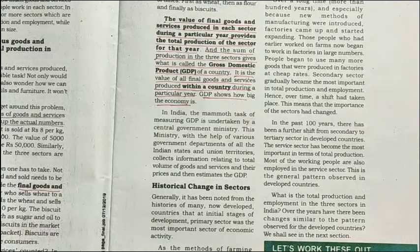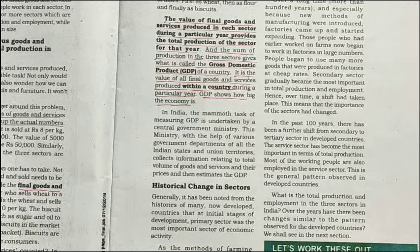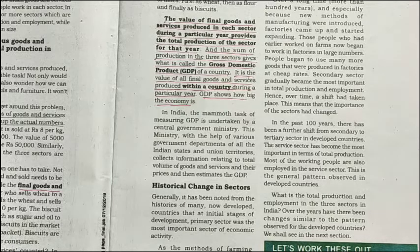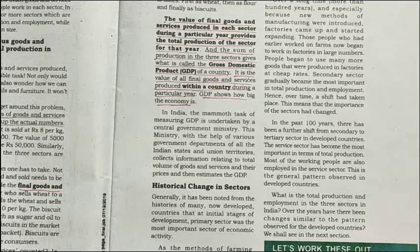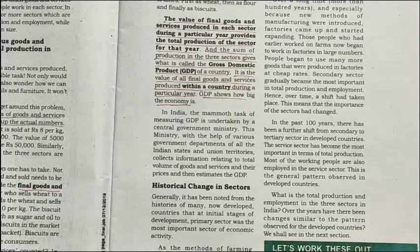In India, the measurement of GDP is undertaken by a central government ministry. With the help of various government departments of all Indian states and union territories, they collect information relating to the total volume of goods and services and their prices, then estimate the GDP of each state. It is a very long and huge task that takes a lot of time. That is how the total production is counted.